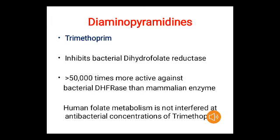Trimethoprim inhibits bacterial dihydrofolate reductase. There are two types of this enzyme — bacterial and mammalian. Trimethoprim is 50,000 times more active against the bacterial enzyme than the mammalian enzyme, so human folate metabolism is not interfered with at antibacterial concentrations of trimethoprim.